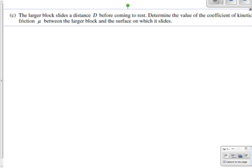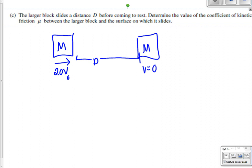Part 3 says the larger block slides a distance d before coming to rest. So we know that this block, m, which started out traveling at 2v initial, is going to travel some distance d before it gets over here and its velocity is 0. And then we know that there's friction there. And we're trying to find that coefficient of friction. So this is, again, a classic way that we can use conservation of mechanical energy and the work kinetic energy theorem.